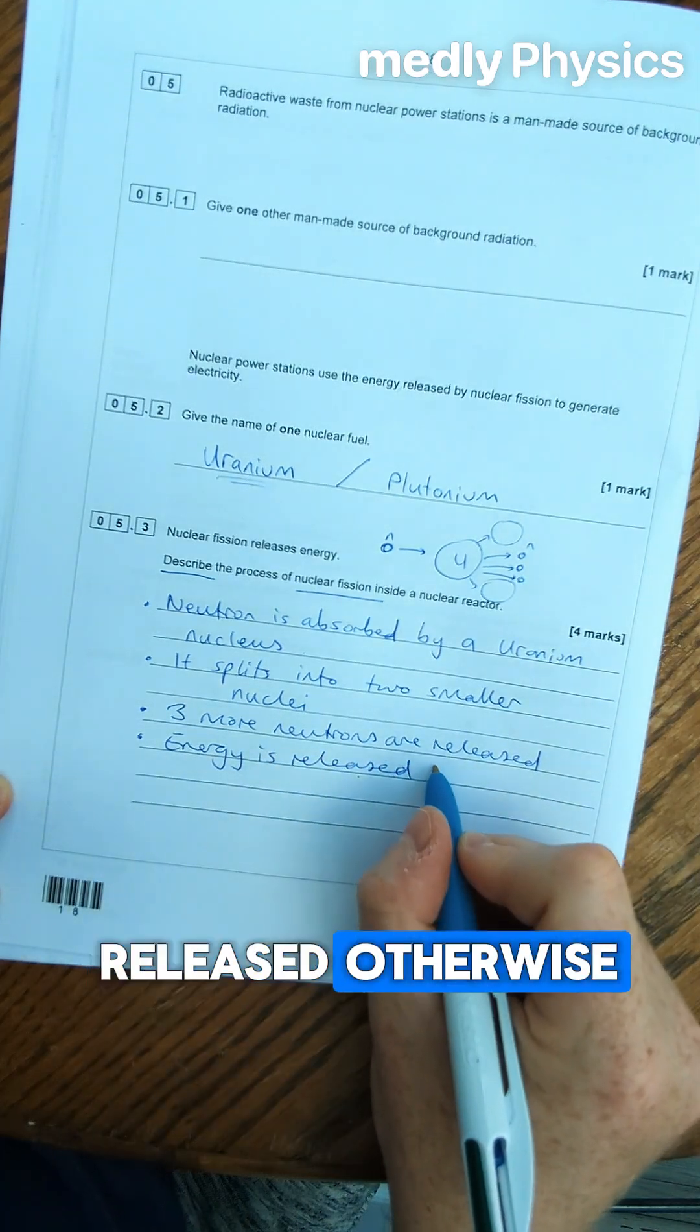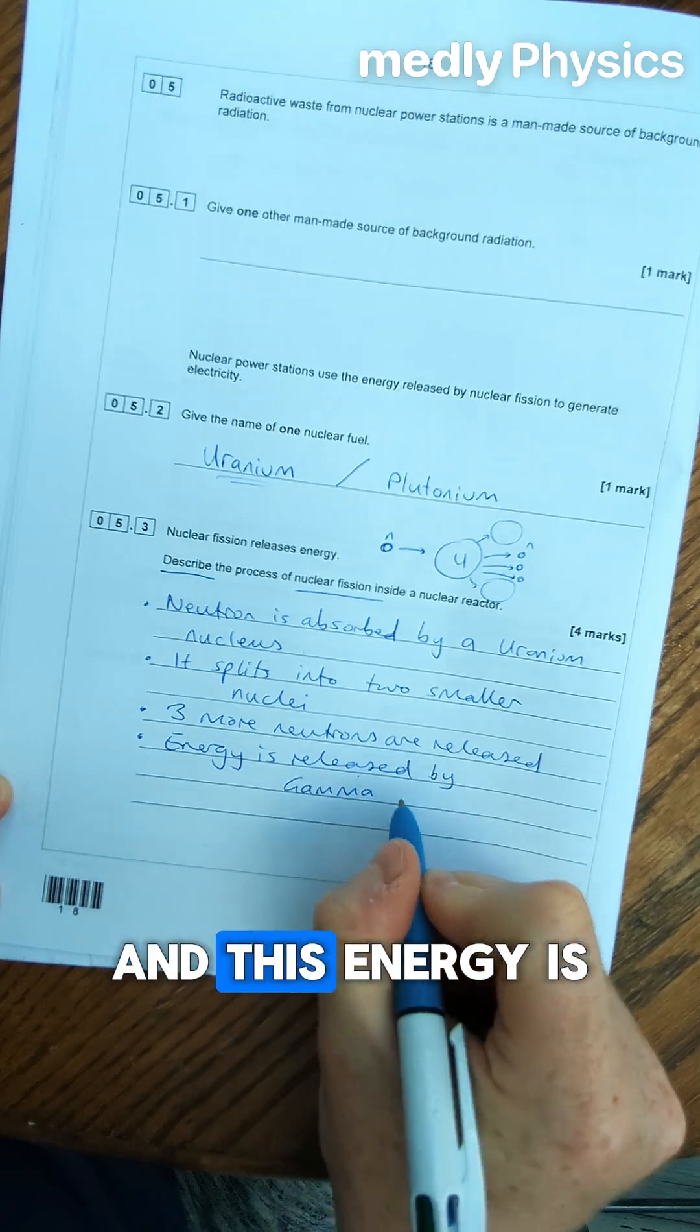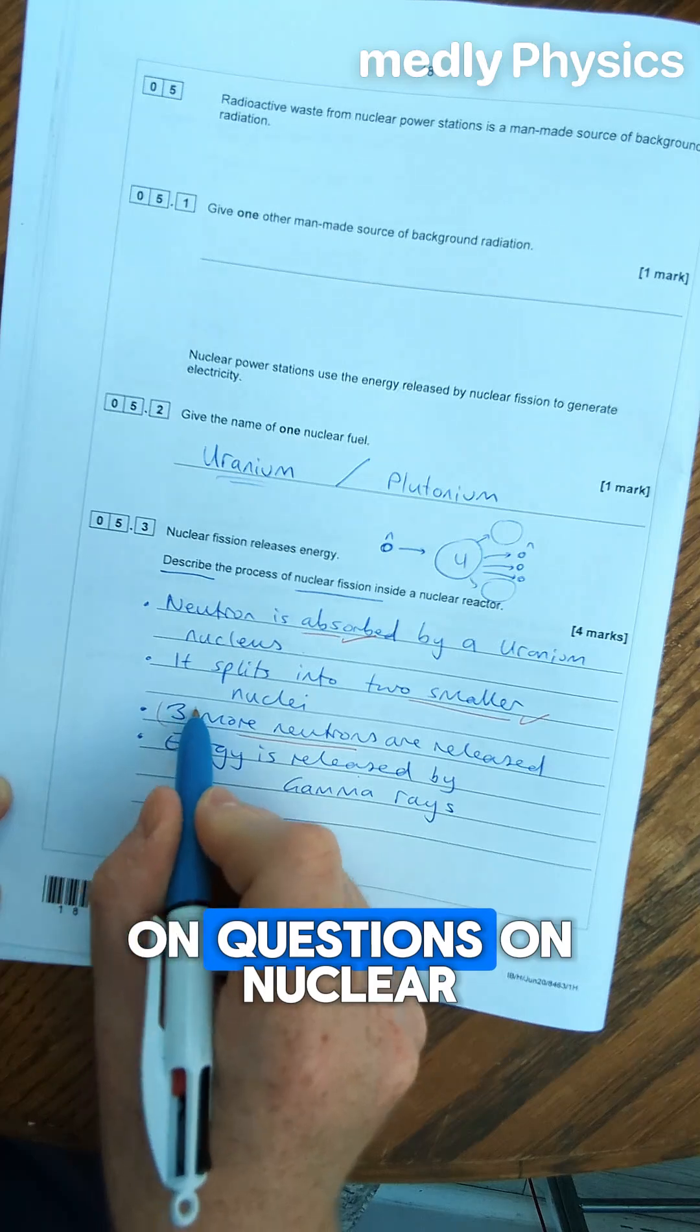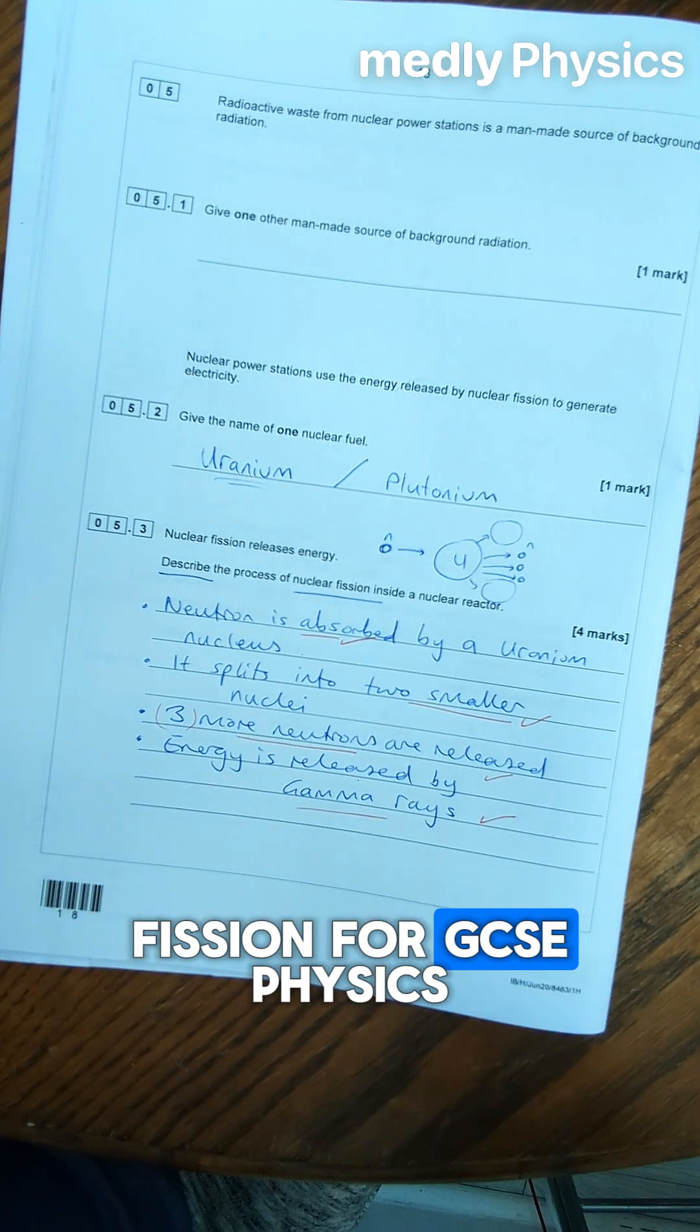And there's also energy released. Otherwise why would you use it in a nuclear reactor? And this energy is released by gamma rays. I hope you found that useful to get full marks on questions on nuclear fission for GCSE physics.